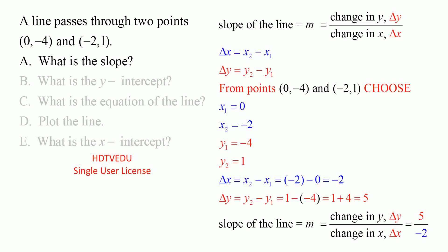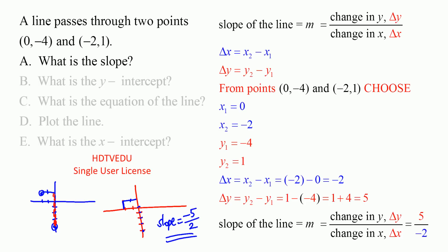We have the line passing through the two points (0, -4) and (-2, 1). For every two units you move horizontally to the right, you move down — from here to here is one — so for every two units you move to the right you go down by one, two, three, four, five. So what is the slope? Negative five over two.